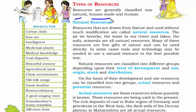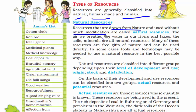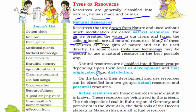Resources are generally divided into natural, human-made, and human resources. Don't get confused between human-made and human — humans are we ourselves, while human-made refers to the things we have made. Natural resources are drawn from nature and used with a little modification. Examples include air, water, lakes, soil, and minerals. Natural resources are classified into different groups depending on level of development, origin, stock, and distribution.